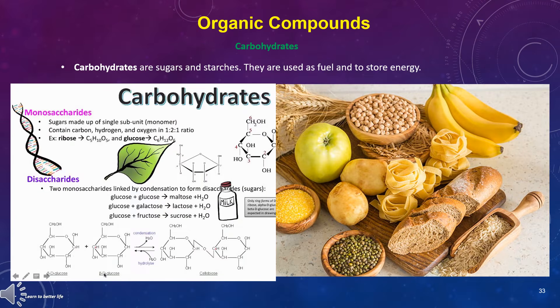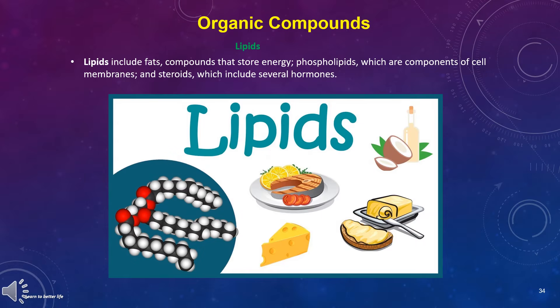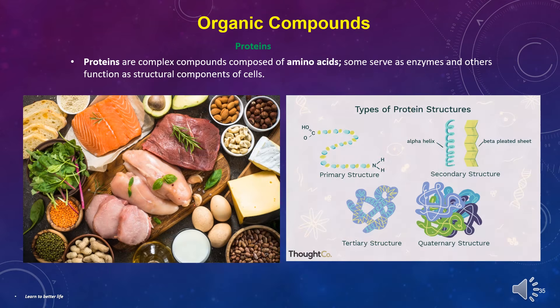Carbohydrates are sugars and starches, used as fuel and to store energy. Lipids include fats — compounds that store energy — phospholipids, which are components of cell membranes, and steroids, which include several hormones. Proteins are complex compounds composed of amino acids; some serve as enzymes and others function as structural components of cells. Proteins are abundant in meat, fish, eggs, nuts, beans, legumes, and seeds.